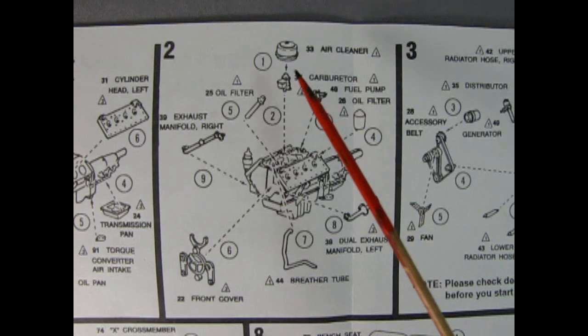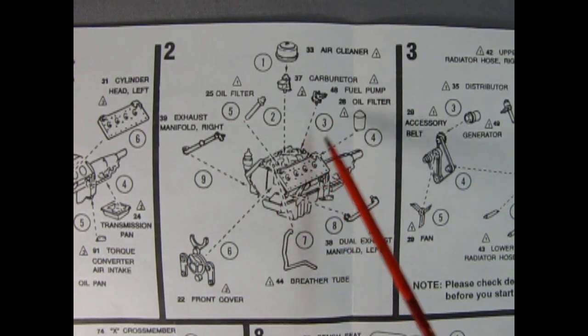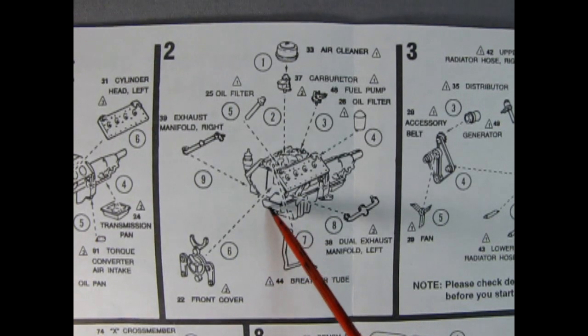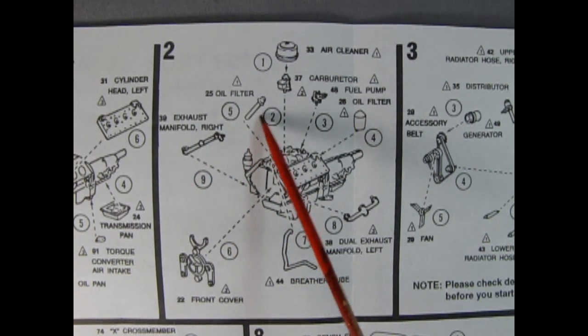Panel two shows our air cleaner and carburetor being glued together and dropped onto the manifold. We have a fuel pump, an oil filter, dual exhaust manifolds, a breather tube, the front engine cover and our other exhaust manifold as well as the oil filler pipe.